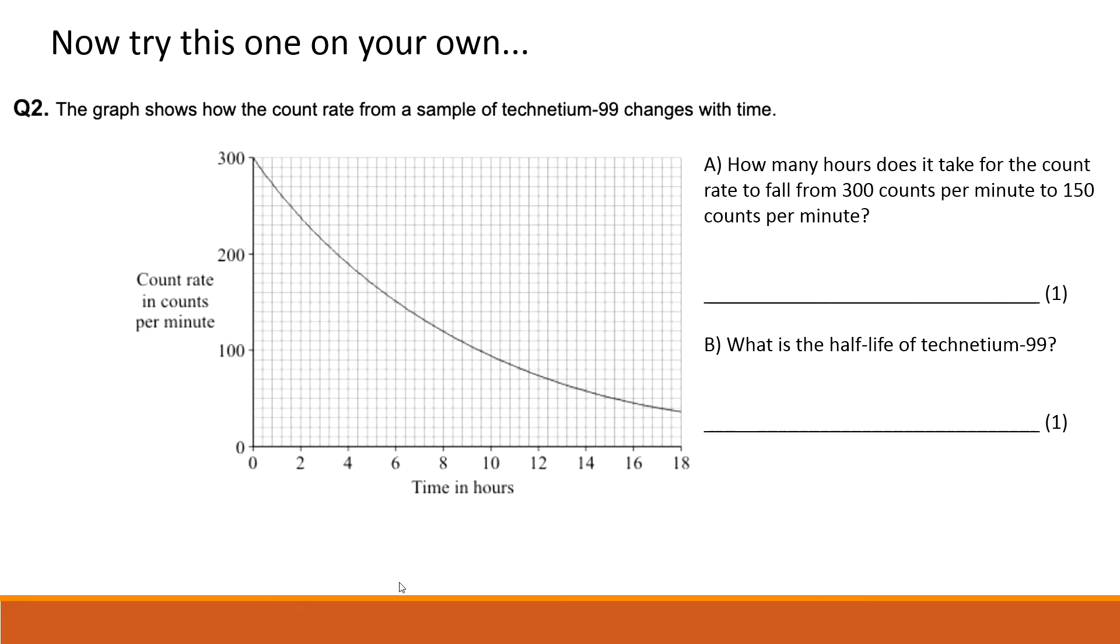So here's a second question for you, so you can pause the video and have a go at it. Let's have a go now. The graph shows how the count rate from a sample of technetium-99 changes with time. Part a: how many hours does it take for the count rate to fall from 300 counts per minute to 150 counts per minute? Well, the answer is 6 hours. So you would go across with a ruler at this position here, and you would go down from this point here and you can see it gives you exactly 6 hours. Like we did on the last question, you should show that with a line.